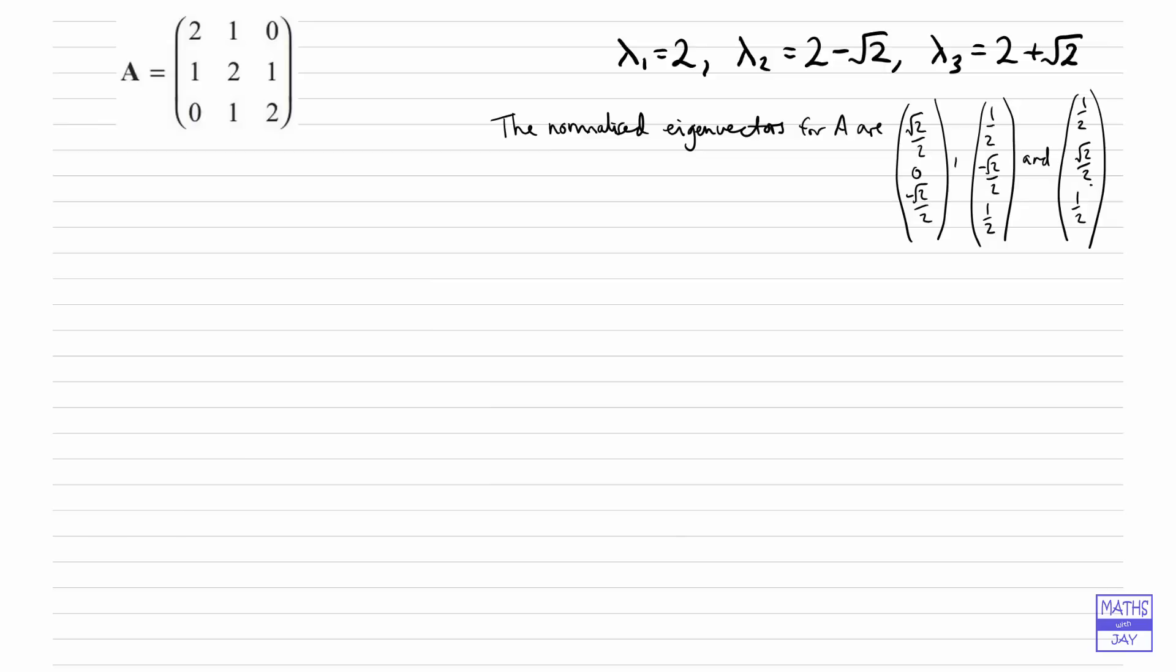So the first eigenvector relates to the first eigenvalue and so on. It's really important in part C when you're doing the diagonalisation that you do keep things in the right order. So if you've chosen to write your eigenvalues in this order then your eigenvectors will be in the same order too.